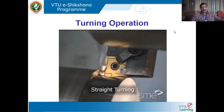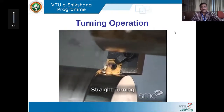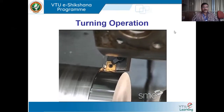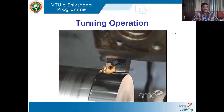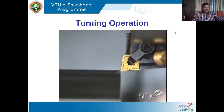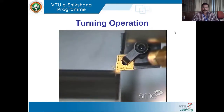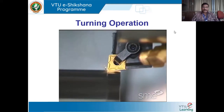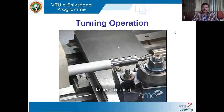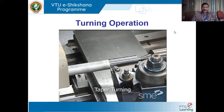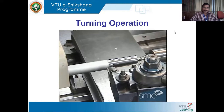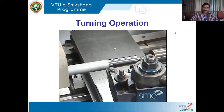In straight turning, the tool is fed parallel to the axis of the workpiece to reduce its diameter so that the final diameter is the same at each end. Removing a significant amount of material in one pass is called rough turning. The final lighter cut that creates a smooth surface finish is called finish turning. Taper turning produces a taper along the axis of the workpiece, accomplished by offsetting the tailstock from the centerline or using a taper attachment.